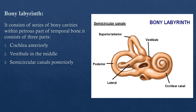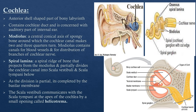The bony labyrinth is a series of bony cavities within the petrous part of the temporal bone and has three parts: the cochlea, placed most anteriorly; the vestibule in the middle; and the semicircular canals, placed posteriorly. We will now go through each part of the bony labyrinth stepwise, followed by the parts of the membranous labyrinth.